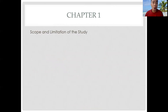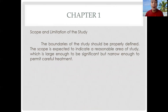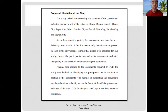Next is the scope and limitation of the study. The boundaries of the study should be properly defined — here you define the boundary and the limitation of your study. The scope is expected to indicate a reasonable area of study which is large enough to be significant but narrow enough to permit careful treatment. The scope should state specifically the nature of the subjects treated, their number, the treatments they receive, and any limitations in the reference population. Your instrument and research design should also be stated in the scope and limitation.